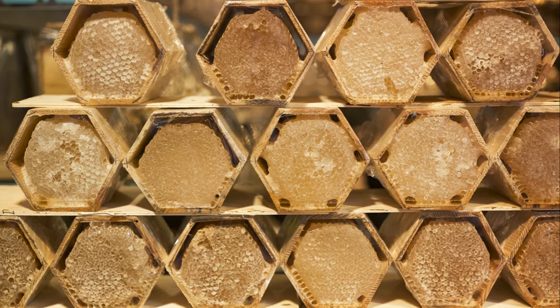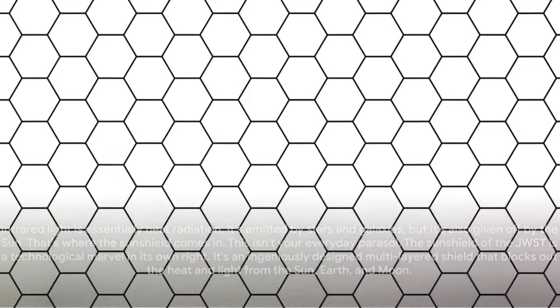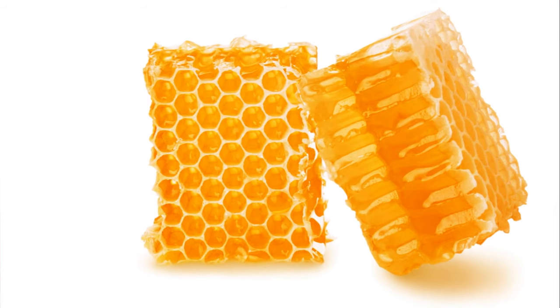This way, the telescope's own heat doesn't interfere with the faint infrared signals it's trying to pick up from the farthest corners of the universe. In essence, the James Webb Space Telescope is a giant gold-coated mirror with an ultra-effective sunshield, floating in the cold depths of space, capturing the universe's oldest light.